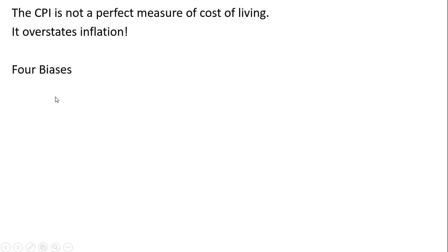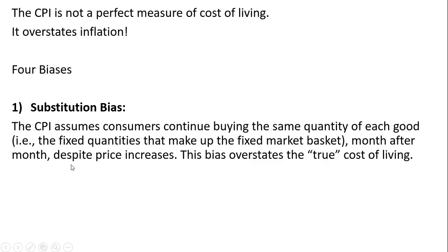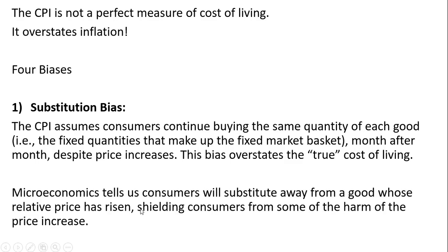There are four biases inherent in the Consumer Price Index. The first bias is the substitution bias. The CPI assumes consumers continue buying the same quantity of each good — that is the fixed quantities that make up the fixed market basket — month after month despite price increases. This bias overstates the true cost of living. Microeconomics tells us consumers will substitute away from a good whose relative price has risen, shielding consumers from some of the harm of the price increase.